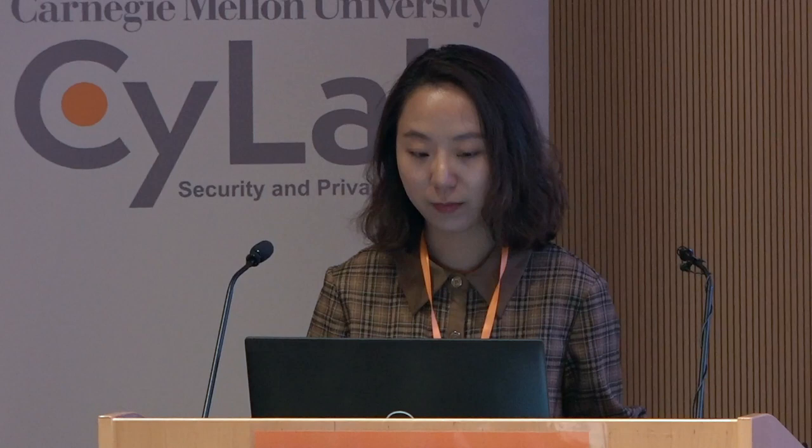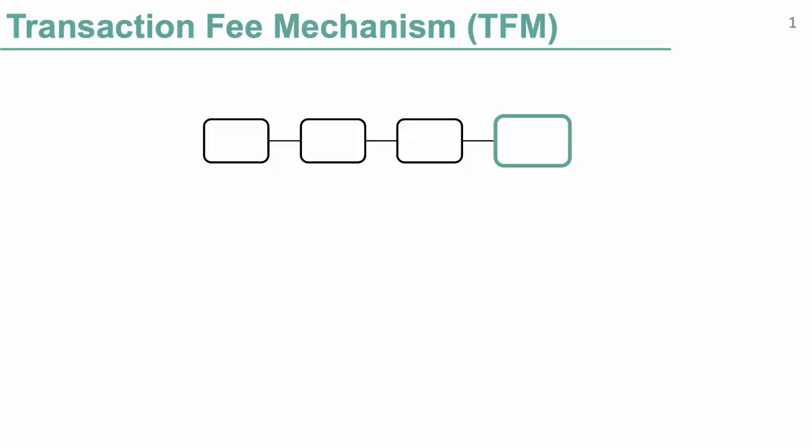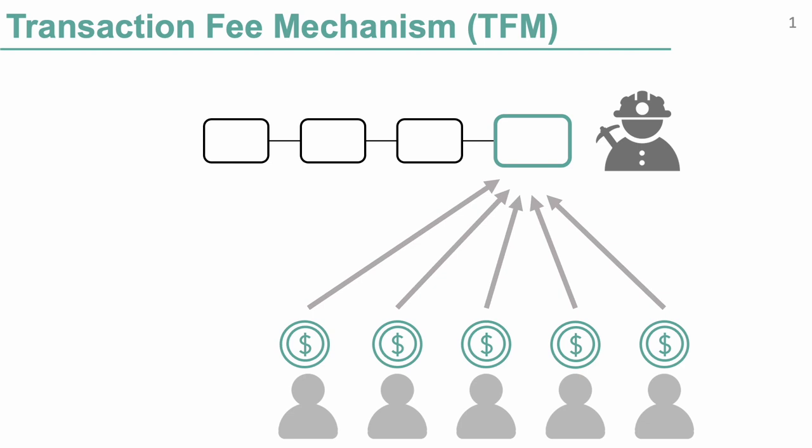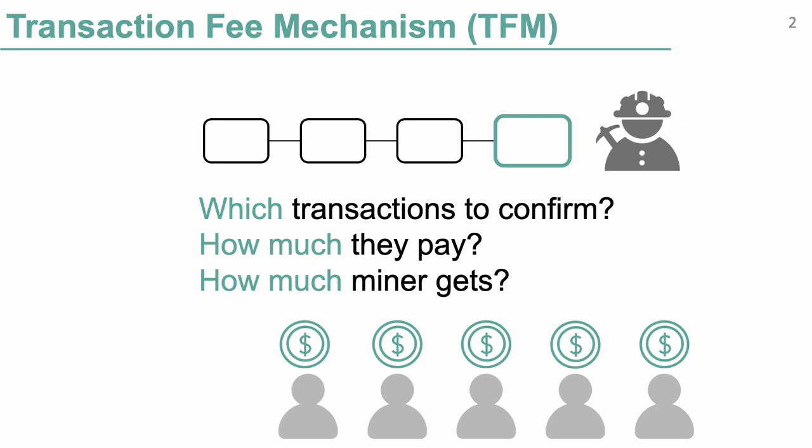In our work, we focus on a specific kind of decentralized mechanism called a transaction fee mechanism. Real estate on blockchain can be expensive, so users want to have their transactions confirmed, and often they compete with each other to get their transactions confirmed. We can view this as an auction, where the miner who mines the current block acts as the auctioneer, selling space in the block to users. The transaction fee mechanism decides which transactions to confirm, how much they pay, and how much the miner gets.